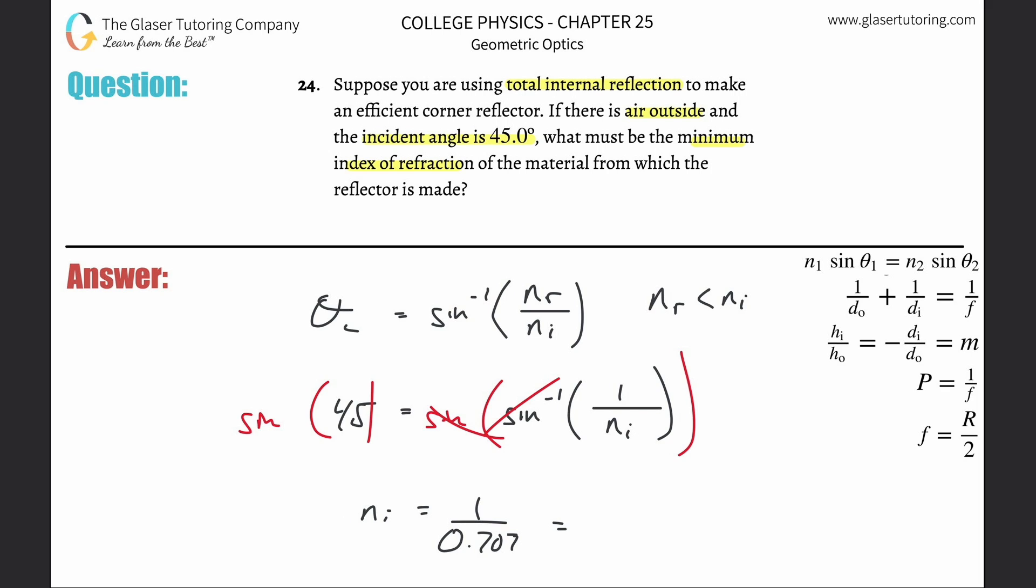This is equal to 1 divided by the net value, and there's 1.414, or in sig figs 1.41. That is now the index of refraction. Like I said, check out number 20. It will make sense. Take care.